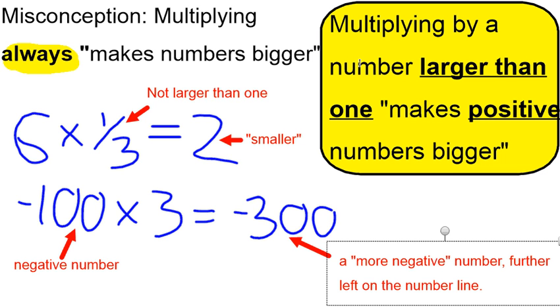What we can say, a little more refined, is to say that multiplying by a number larger than 1 makes positive numbers bigger. So just keep in mind that this original statement is not an absolute.